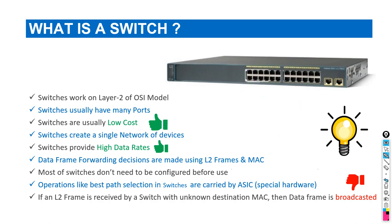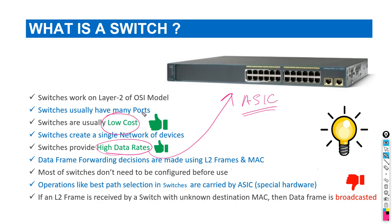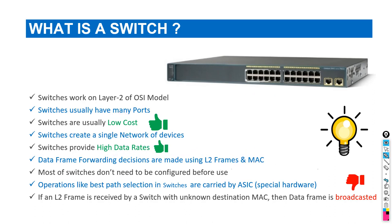Another important point is that switches provide high data rates because their forwarding is based on ASIC processors — based on hardware. They are not working on the software layer, so they have high data rates with low cost. Data frame forwarding decisions are made at layer 2 frames using MAC addresses, as discussed.